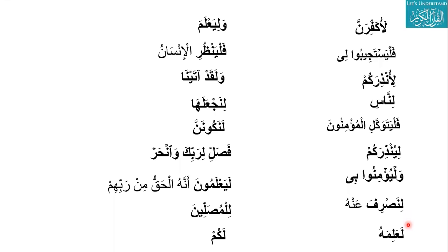Brother Ahsan: la'alimahu — what kind of lam is this? This is Lam Tawkeed, meaning 'for sure.' La'alimahu — 'for sure he knew it.' And why? Because alima is not a mudare' verb and not a noun — it is a past tense verb (fiil madi). So this lam with a fatha means 'for sure' — he knew it for sure.